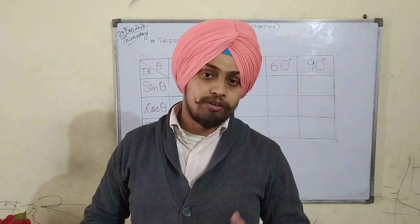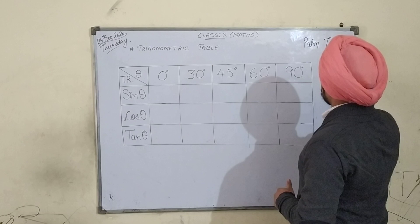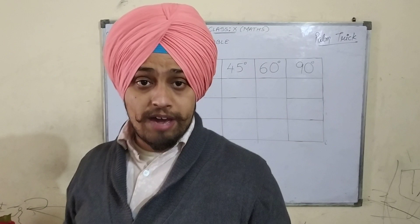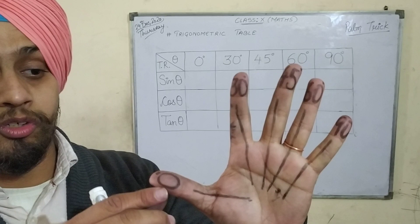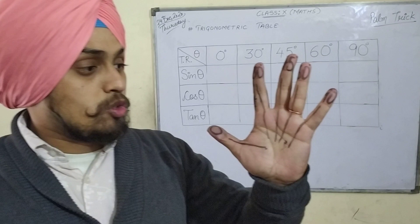So I am here with a trick with the help of which we can recall these values within a few seconds. The name of that trick is the palm trick. I have written all 5 standard angles on my palm as you can see here: 0 degree, then 30 degree, then 45 degree, then 60 degree, and finally 90 degree.